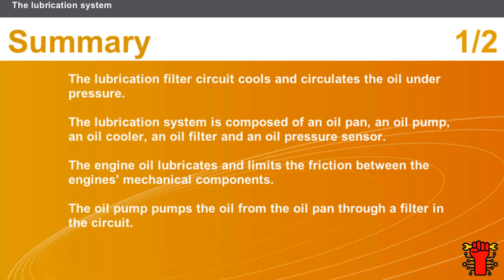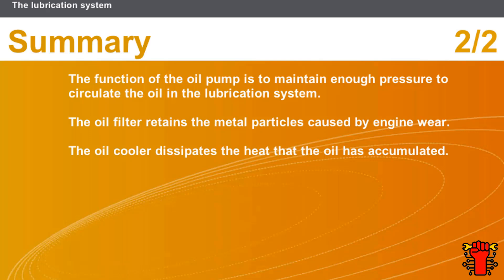In this section we covered the following points: the lubrication circuit cools and circulates the oil under pressure. The system is composed of an oil pan, an oil pump, an oil cooler, an oil filter, and an oil pressure sensor. The engine oil lubricates and limits friction between mechanical components. The oil pump circulates oil from the pan through a filter. The oil filter retains metal particles, and the oil cooler dissipates accumulated heat.